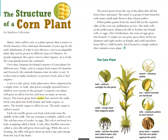The leaves grow from nodes that encircle the stalk. Each corn plant has both female and male organs, or parts. The female organ is called an ear. The male organ is called a tassel. Each ear usually grows out from a leaf node near the middle of the stalk. The ear contains a cylinder called a cob, which has rows of ovules, or eggs.